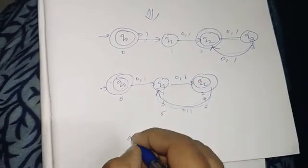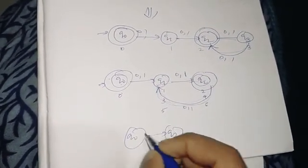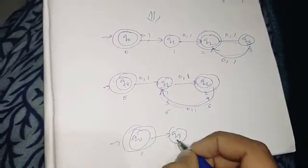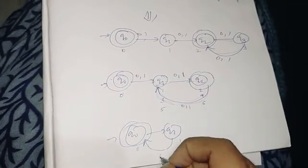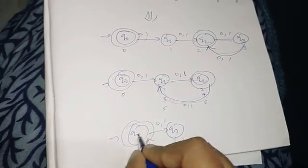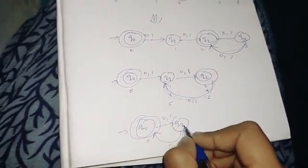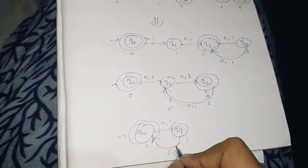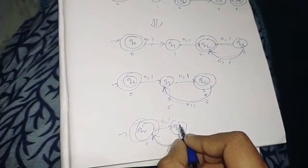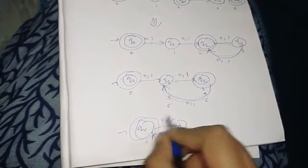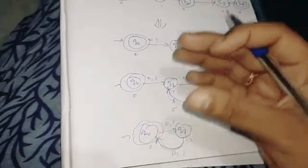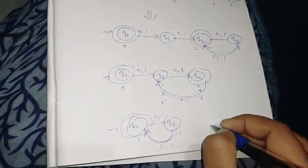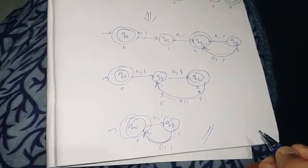Let's simplify. Q0 and Q1 — here we have 0 (even), here we have 1 (odd). Epsilon is accepted at Q0. Q0 is the final state; length 1 at Q1 is not a final state. Length 2 accepted, length 3 not, length 4 accepted, length 5 not, length 6 accepted, and so on. This is the minimal DFA — the corresponding minimal DFA for even-length strings.